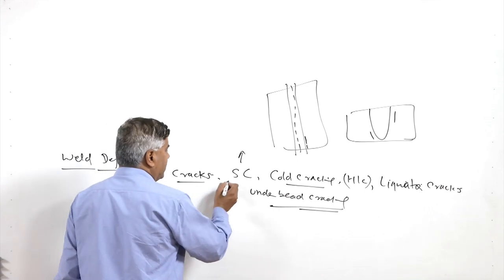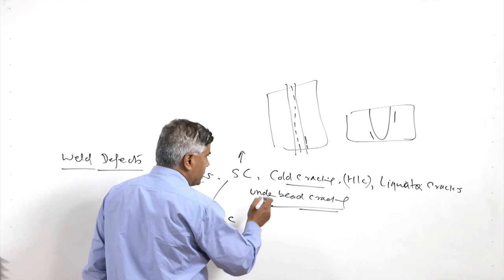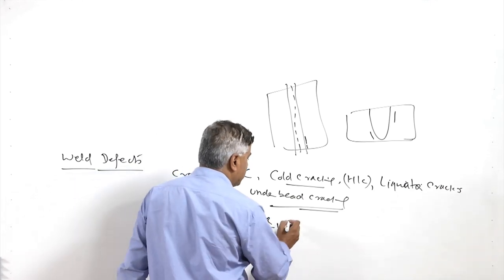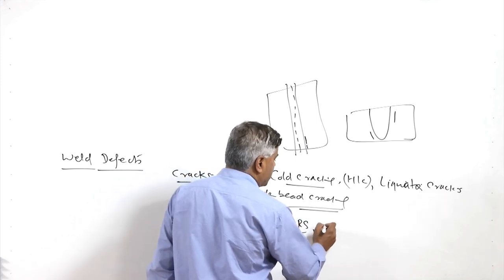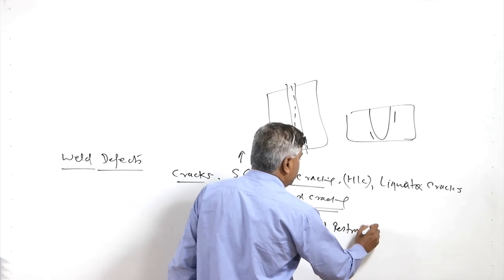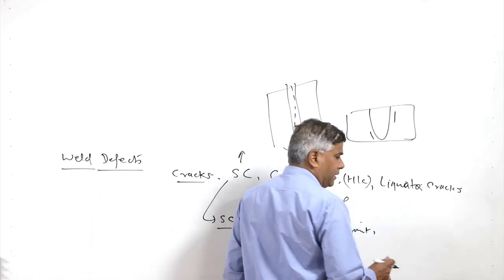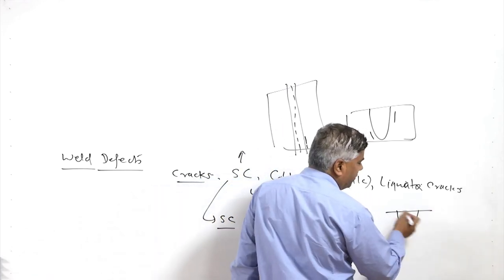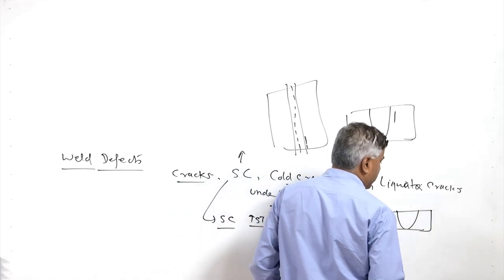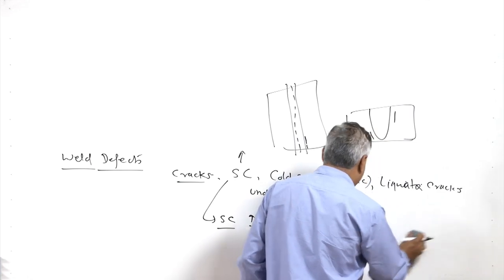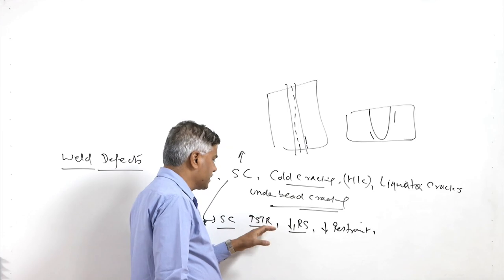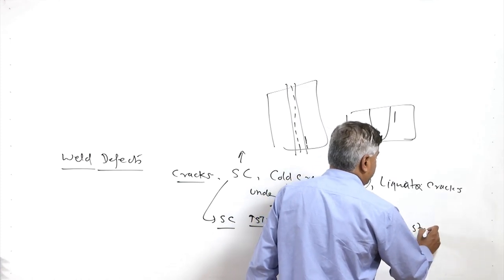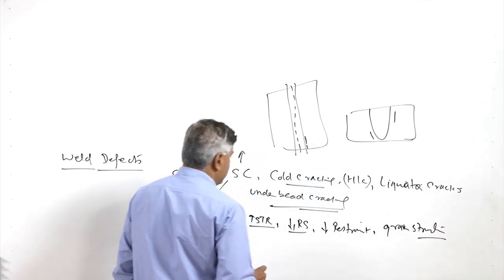Solidification cracking occurs mostly along the weld centre line, especially in high solidification temperature range alloys. To overcome it, efforts are made to reduce residual stress magnitude and restrained welding conditions. The weld metal composition is modified so that the solidification temperature range is reduced. Suitable selection of filler metal considering dilution is kept in mind so the weld metal composition minimizes the solidification range. Grain structure is also refined to help reduce solidification cracking tendency.